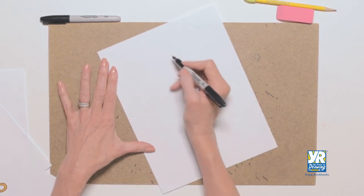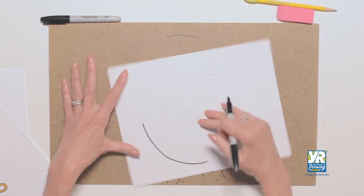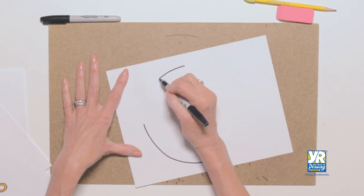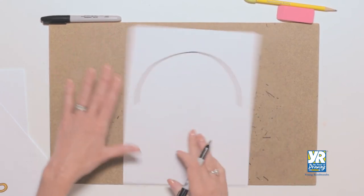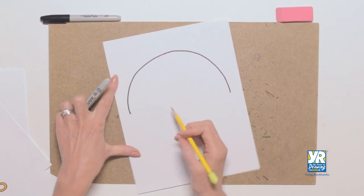We're going to start at the top, we'll go down this way, and I like to turn my paper. Go up, there we go. We have one big round rainbow. Now I'm going to put a guideline in.